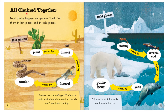All chained together. Food chains happen everywhere — you'll find them in hot places and in cold places. In hot places, the plant is eaten by the insect, which is eaten by a lizard, which is eaten by the snake. Snakes are camouflaged — their skin matches their environment so lizards can't see them coming. Poor lizards!